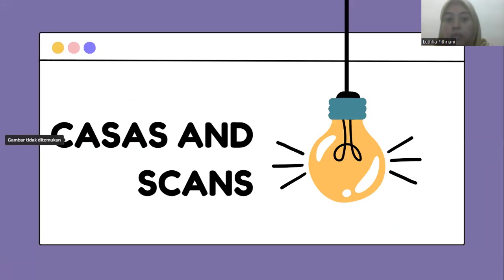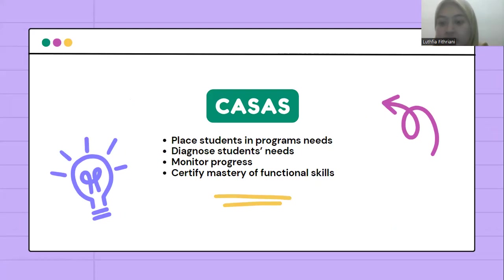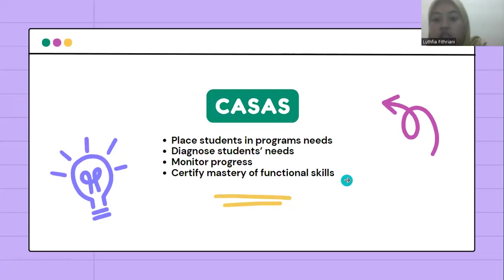Let's move to the second topic, CASAS and SCANS. CASAS, or Comprehensive Adult Student Assessment System, is designed to provide broadly-based assessment of ESL curricula across the US. It includes more than 80 standardized assessment instruments used to place students in programs, diagnose students' needs, monitor progress, and certify mastery of functional skills.